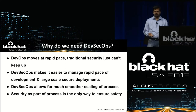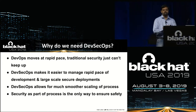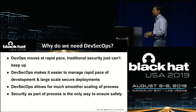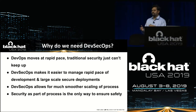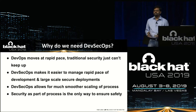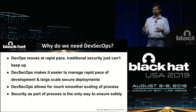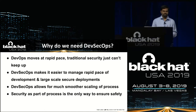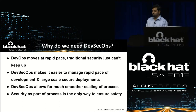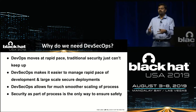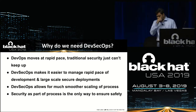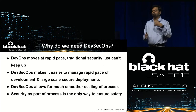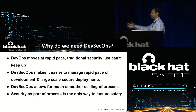Why do we need DevSecOps? DevOps combined dev and operations for rapid development and deployment. The problem is security in traditional form cannot keep up. Pen testing for an application might take three, four, or five days — but when you're deploying maybe 20 times a day, you can't afford that. DevSecOps makes it easier to have security as part of your process and pipeline. If you want to keep pace with rapid development, security must be part of the process, not an end point after a certain number of steps.